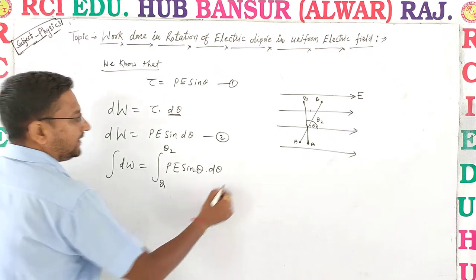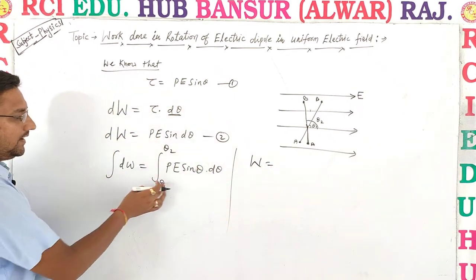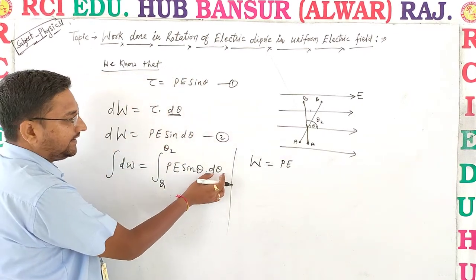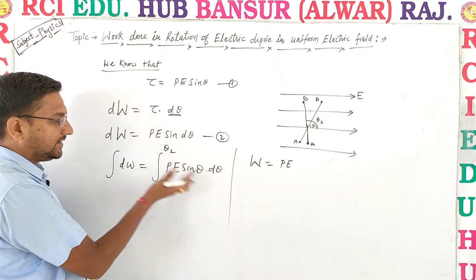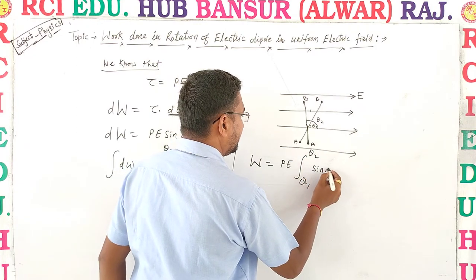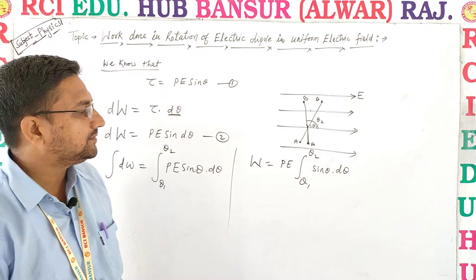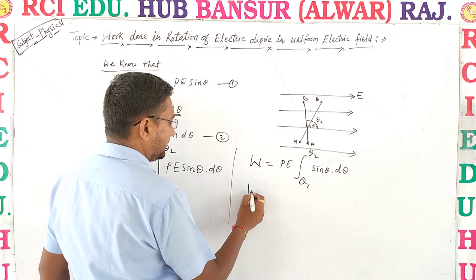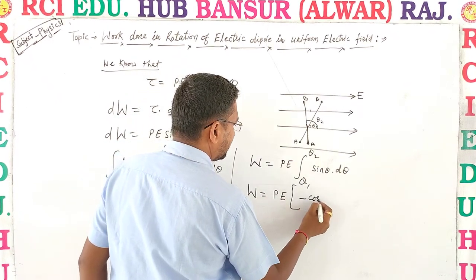Solving: integration of dW is W, and pE is constant so it comes outside. Integration of sinθ with respect to θ from theta1 to theta2 gives negative cosθ. So W = pE × [−cosθ] from theta1 to theta2.